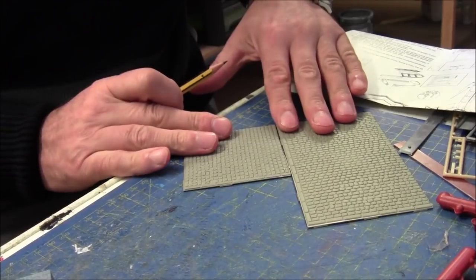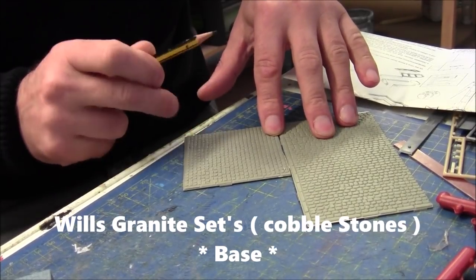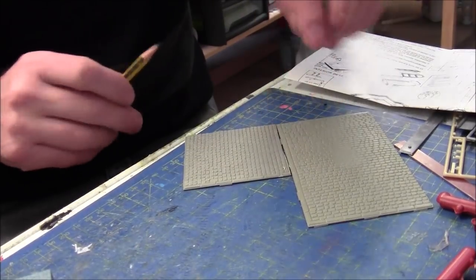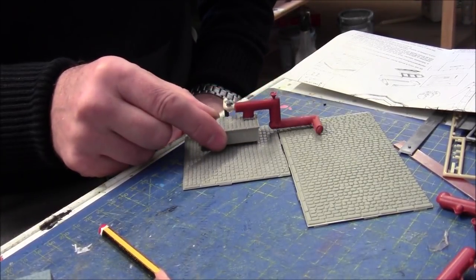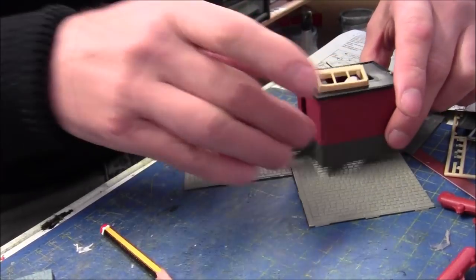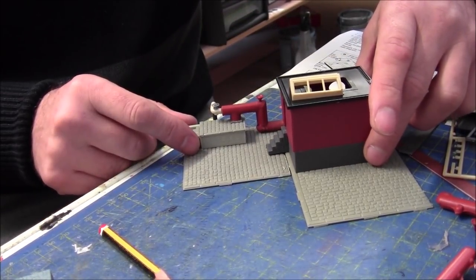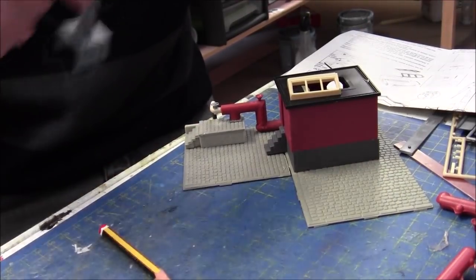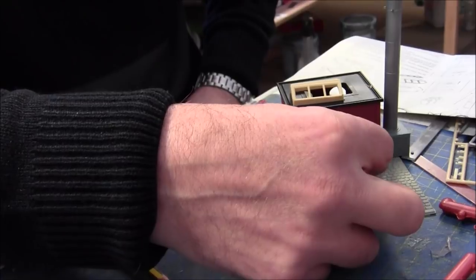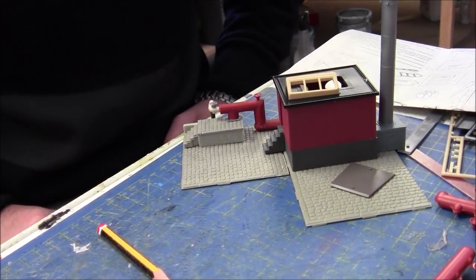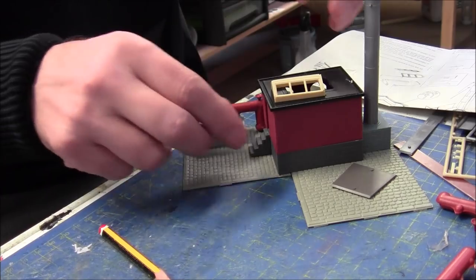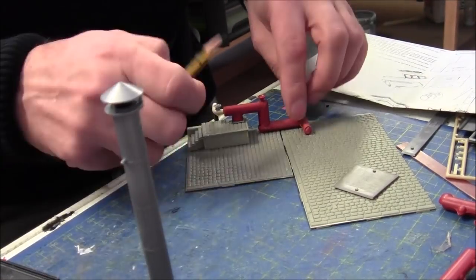I'm using the Wills scenic materials pack granite sets. The boiler house will sit about there, chimney will go on the back, and there's another outhouse building which will go in this area here. The next thing is to notch that piece out and glue this piece to that bit.